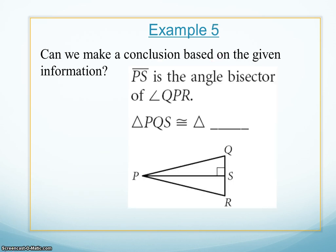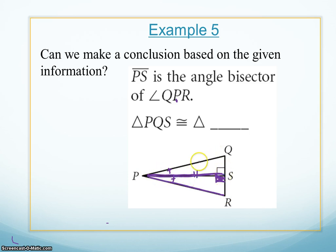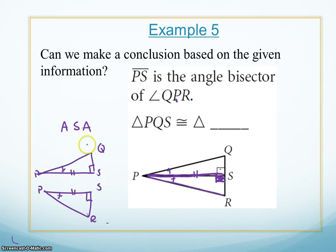Here in example five, we're told that PS — the middle line — is the angle bisector of angle QPR. So P is bisecting this angle, giving me two triangles. I know one is a right triangle, so the other must also be a right triangle. In my lower triangle I have an angle, then a congruent side — since PS is shared — and then a 90-degree angle. So I have angle-side-angle. Pulling the triangles apart, Q corresponds to R, the P's are in the same locations, and S's match as the 90-degree angles. The Q and R are the ones without markings, so we know they're congruent. Triangle QPS is congruent to triangle RPS by angle-side-angle.